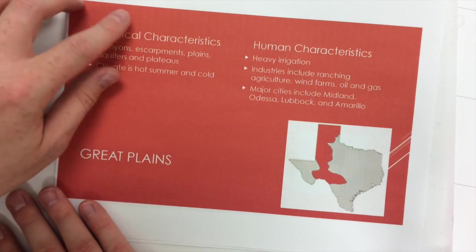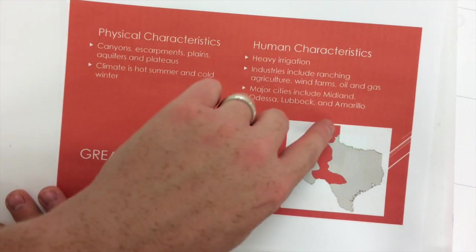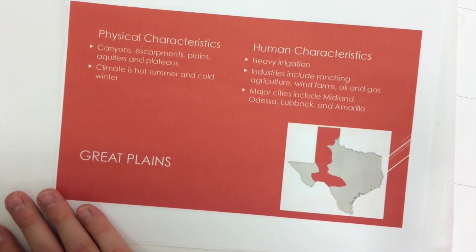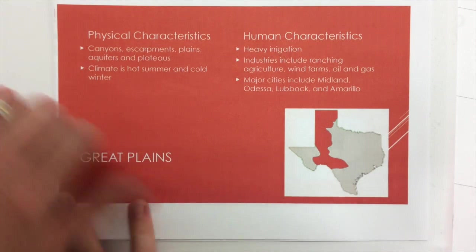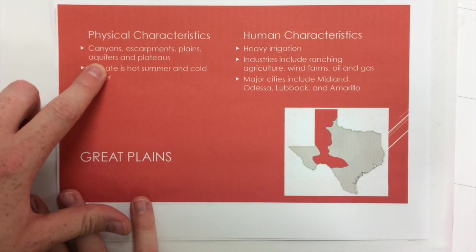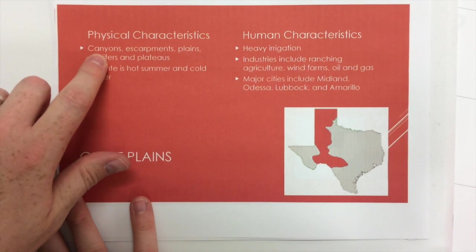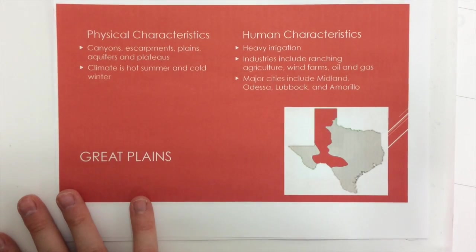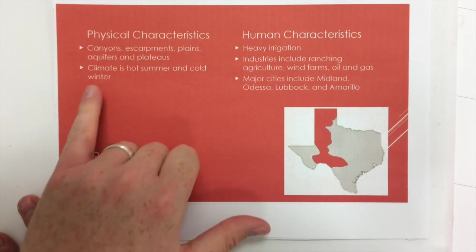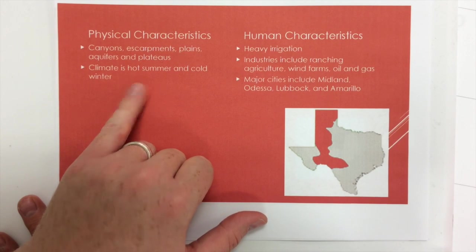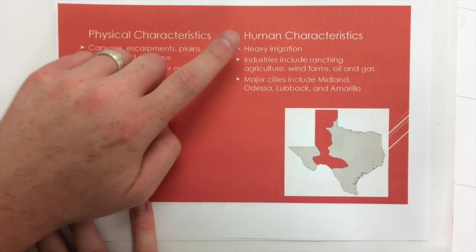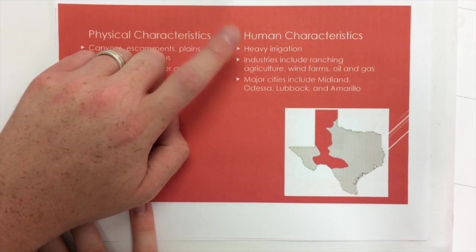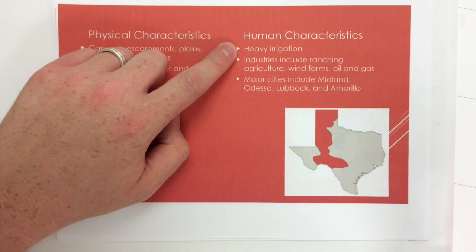The next region is the Great Plains. This area includes Lubbock. There are going to be canyons, escarpments, plains, aquifers, and plateaus. Aquifers are underground water systems. Palo Duro Canyon is up around Amarillo. The climate is very hot during the summer and very cold during the winter — that's why we get lots of snow but also really warm days.